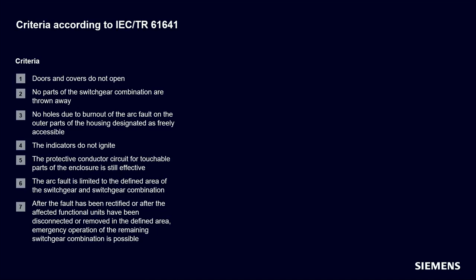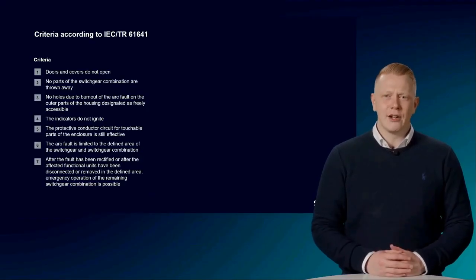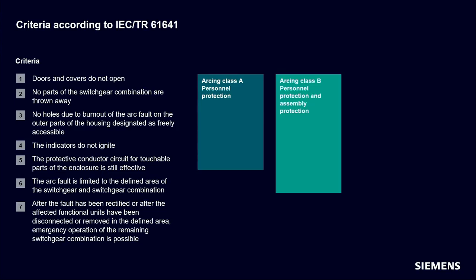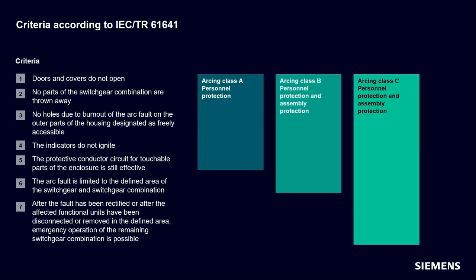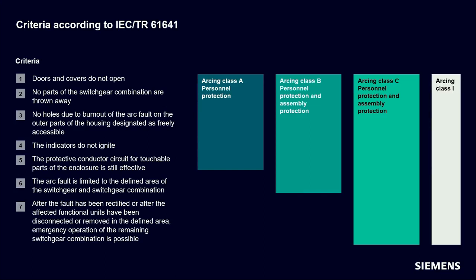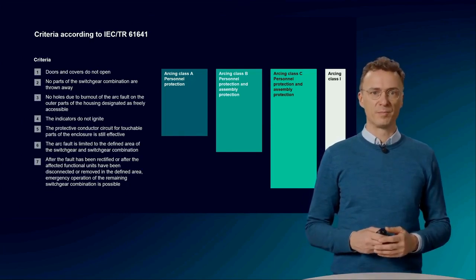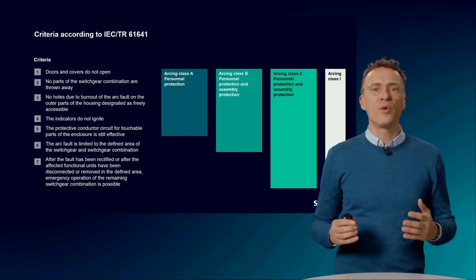Four so-called arcing classes are defined in the technical report. Arcing class A achieves personal protection under arcing conditions by fulfilling Criteria 1 to 5. Arcing class B corresponds to a switchgear assembly with personal and system protection, meeting Criteria 1 to 6 — limiting the impact to a certain area. In arcing class C, limited emergency operation as described in Criterion 7 is also possible. Last but not least, arcing class I is a switchgear assembly with a reduced risk of arc faults due to the sole use of arc-protected zones, such as insulation.